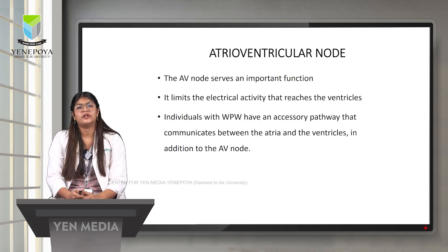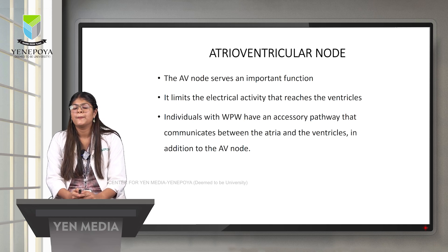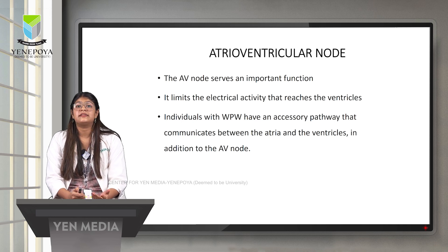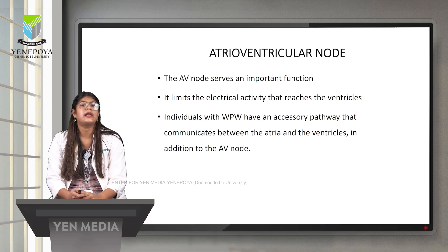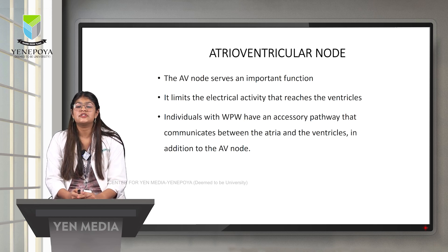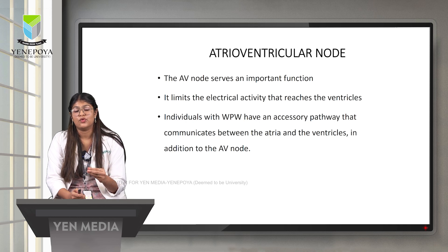The AV node serves an important function in the conduction system: it limits the electrical activity that reaches the ventricles. Impulses generated from the sinoatrial node, the natural pacemaker of the heart, travel down to the AV node, then through the bundle of His, dividing into left and right bundle branches, and finally reaching the Purkinje fibers, resulting in ventricular depolarization and contraction. The AV node slows down conduction before impulses reach the ventricle.